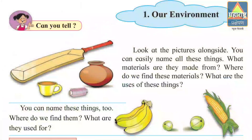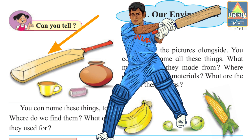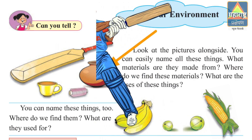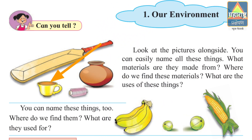What are the uses of these things? A bat is used for playing. A pot is used to store water. A cup is used to drink milk, tea, or coffee. Thread is regularly used for stitching clothes. You can name these things too.